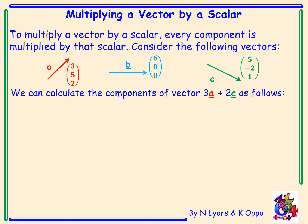We can calculate the components of vector 3a plus 2c as follows: 3 lots of a would be 3 lots of 3 by 2, plus 2 lots of c, and vector c is 5, negative 2, 1. We must multiply each component by the scalar outside, resulting in 3a being 9, 15, 6, and 2c being 10, negative 4 and 2. Adding these together will give a resultant vector of 19, 11, 8.